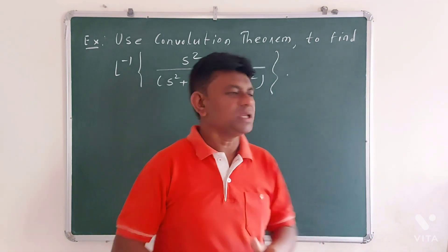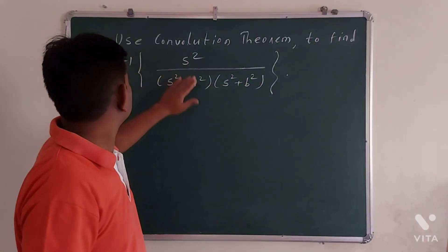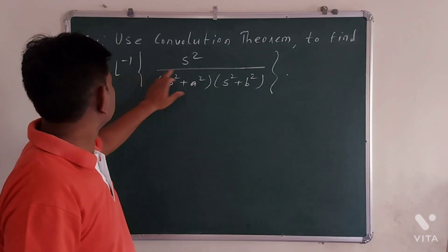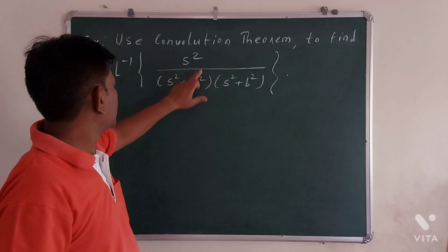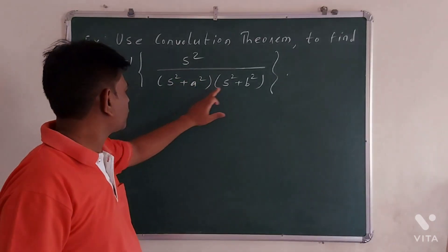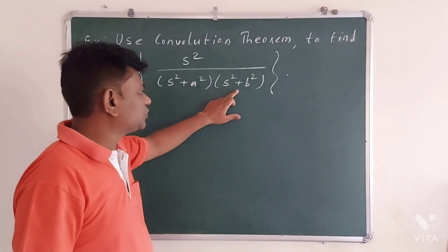Now the example is: use the convolution theorem to find the inverse Laplace transform of s squared over (s squared plus a squared) times (s squared plus b squared).